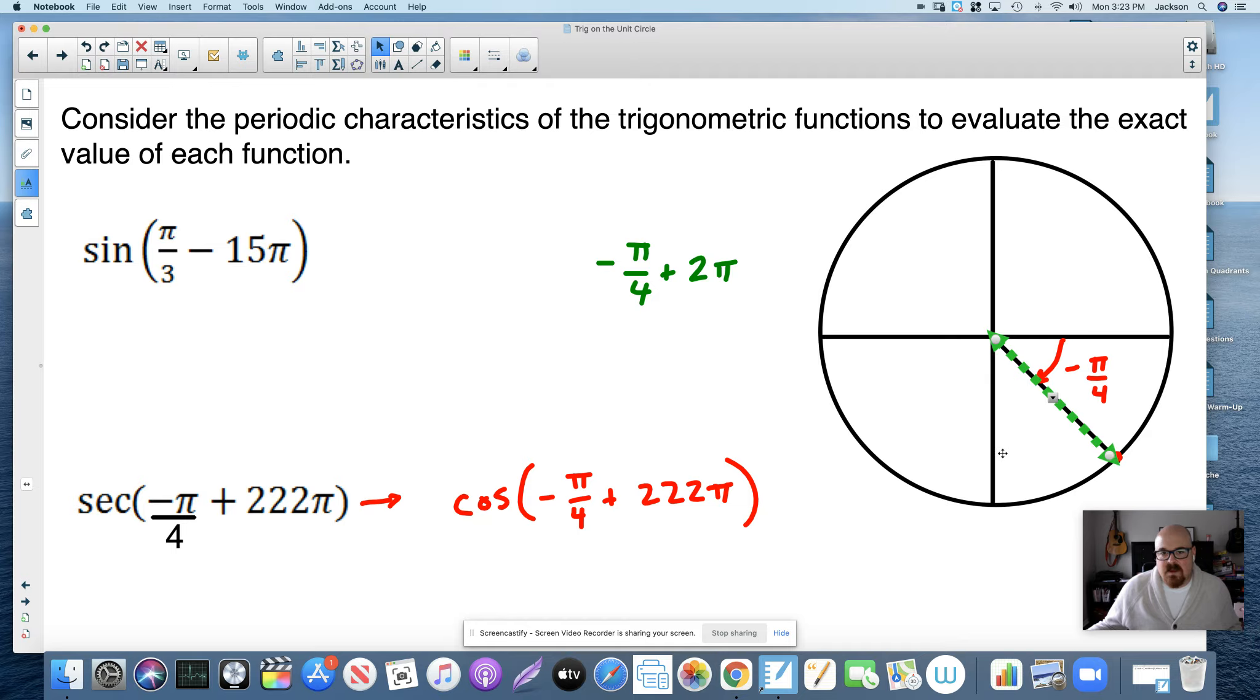Well, this angle is saying the cosine of negative pi over 4, now add 222 pi. The trick to this is knowing your even and odd numbers, right? Because 222 pi is 2 pi times 111. So 2 pi, the full rotation of the unit circle, times 111 - this means 111 rotations around the unit circle.